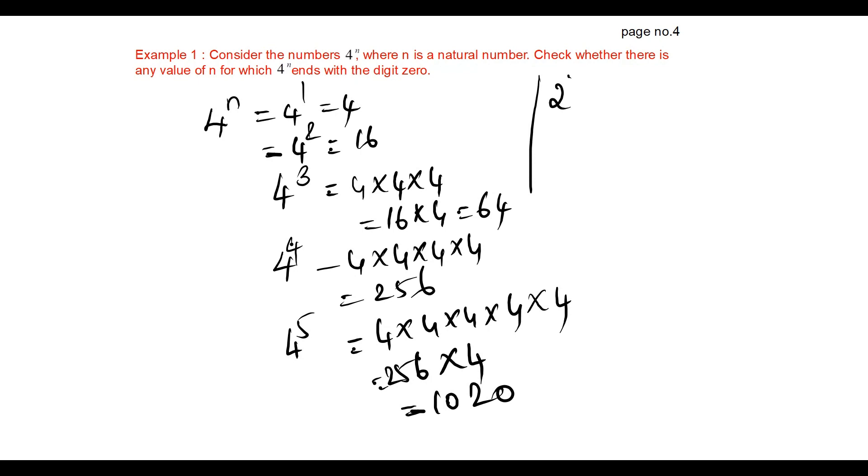4 power N can be written as 2 to the power 2N. 2 into N is an even multiple. So 2 to the power 2, 2 to the power 4, 2 to the power 6, etc., will not be ending with 0. So under this condition, 4 power N will not end with the digit 0 at any value of N.